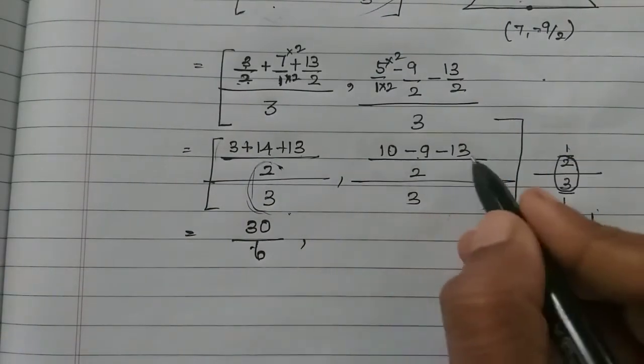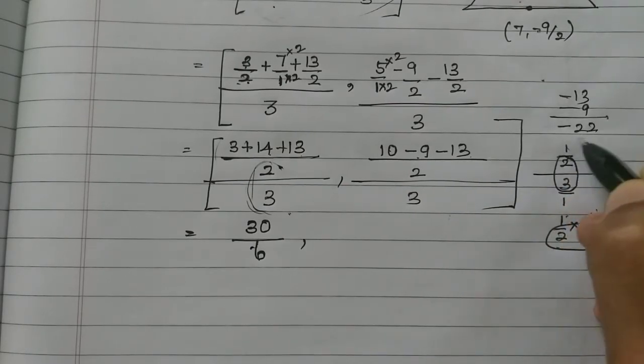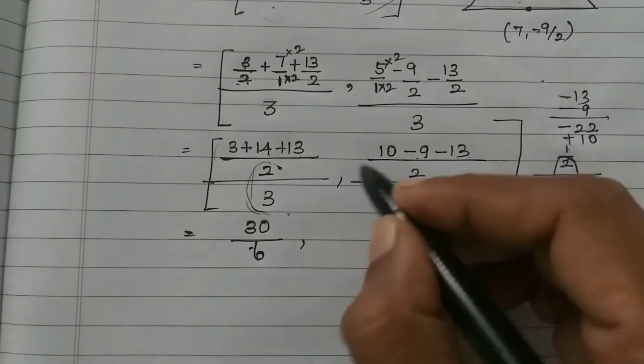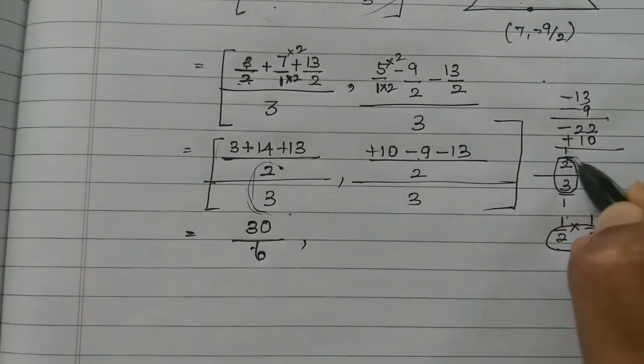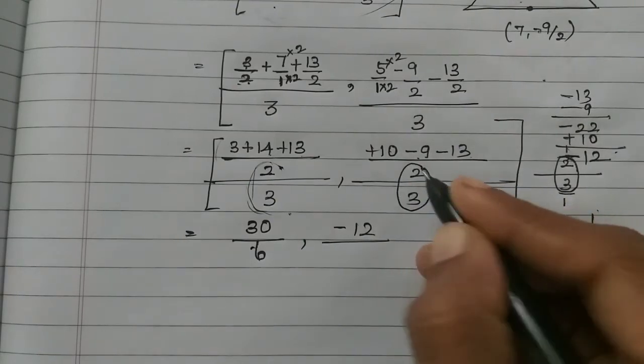Then here is minus 13 minus 9, then there is minus 22. That is plus 10, it is plus 10. So minus 12.